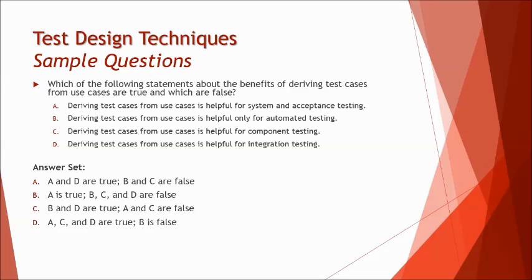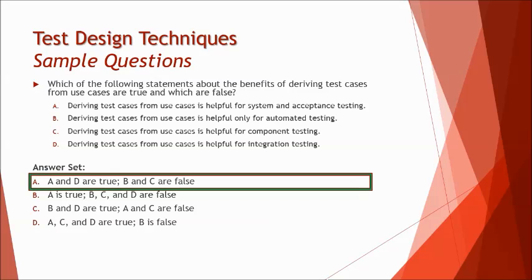D is also a correct statement. So finally, we have got A and D being the right option. And A is the option which has those statements as true. So A and D are true, B and C are false is the right answer.